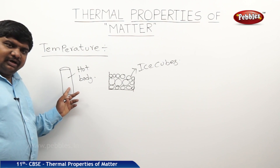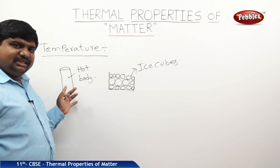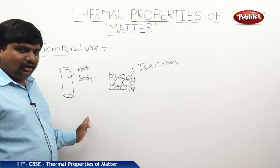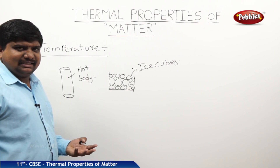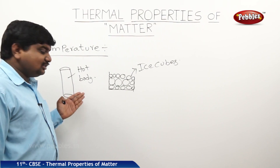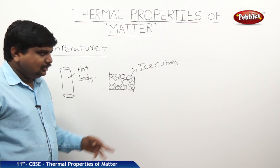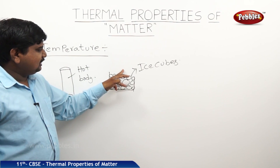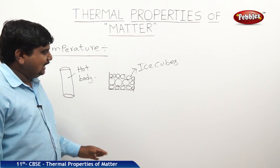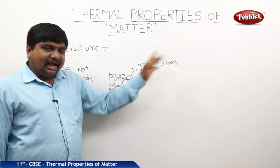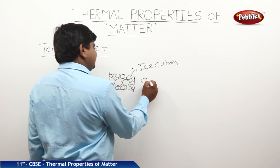When we touch the hot body — the iron rod placed under the hot sun — we will feel some hotness. Sometimes it causes a burning sensation also. But if you touch the same hand or the other hand within ice cubes, you will feel a cool sensation.